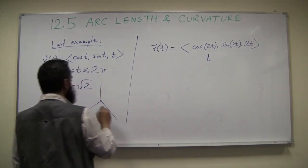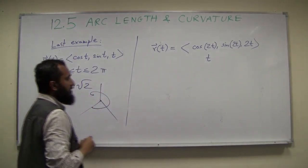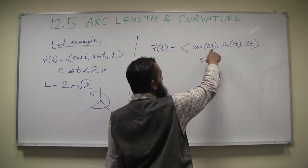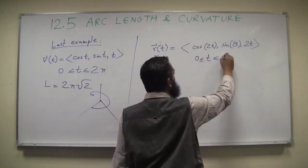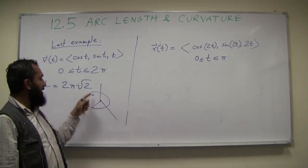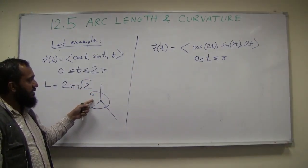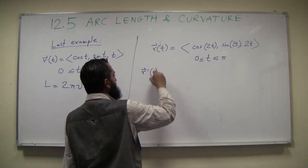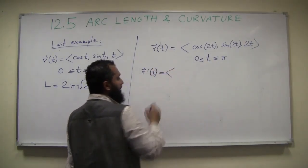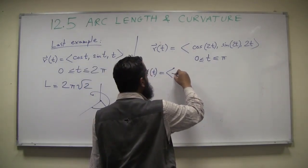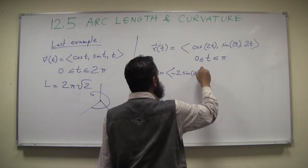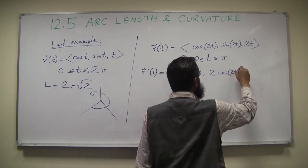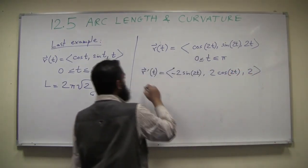Here's another parameterization: r(t) = (cos 2t, sin 2t, 2t). To trace out exactly one loop of the helix, since each t gets multiplied by 2, you only need t between 0 and π. If we went from 0 to 2π it would trace out two loops, which is not what we want. Let's do the calculations for practice. The derivative vector is (-2 sin 2t, 2 cos 2t, 2).